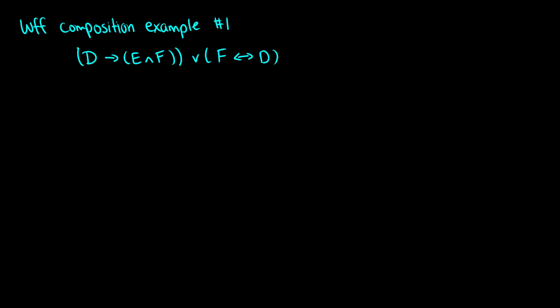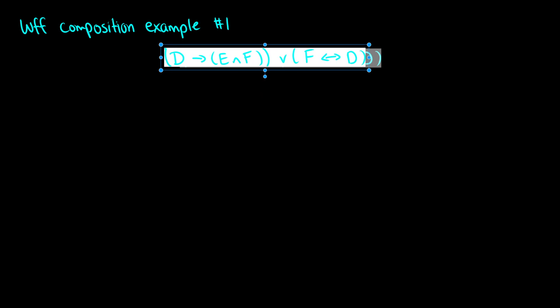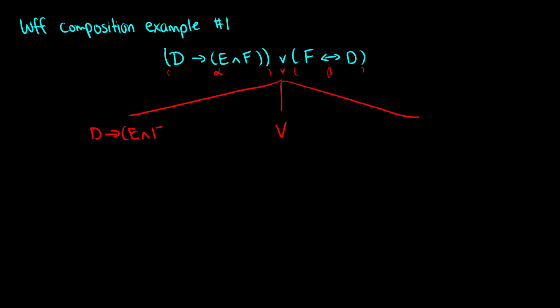Now I'm going to take a look at two different formulas and break them down into how they were composed using our rules. I'll center this to build a tree structure. The first thing is identifying the main connective by looking at the brackets. I see a bracket that starts here and closes at the end, and another set of brackets in the middle, so I know there are two things — alpha and beta — connected by OR. We have (D arrow (E and F)) on one side, and (F if and only if D) on the right.